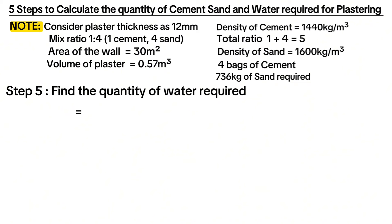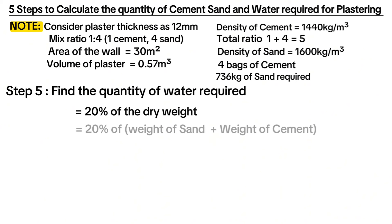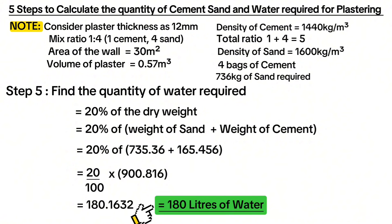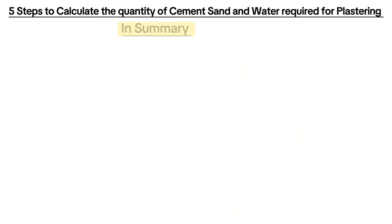Step 5 is to find the quantity of water required, which is simply 20% of the dry weight — that is, 20% of the weight of sand plus the weight of cement — giving 180 liters. In other words, for a wall of 10 meters in length and 3 meters in height, you need 4 bags of cement, 736 kilograms of sand, and 180 liters of water to plaster the wall.